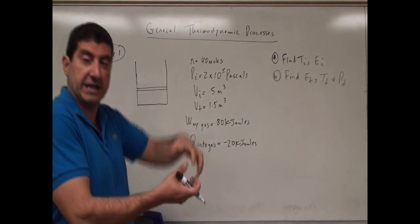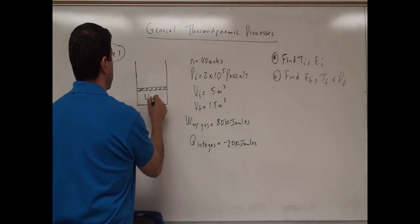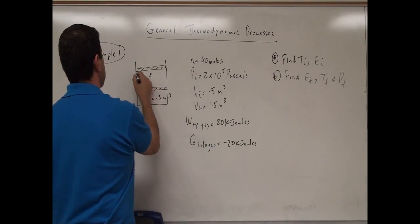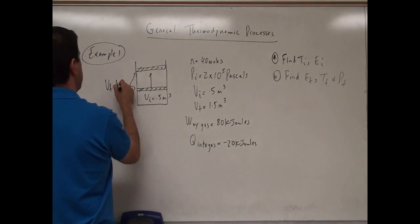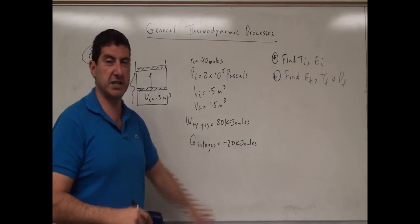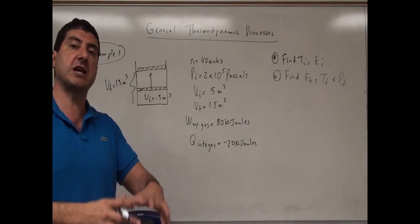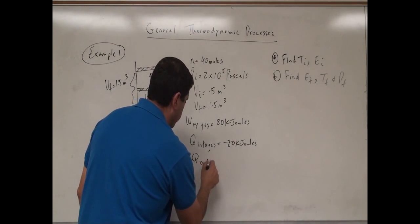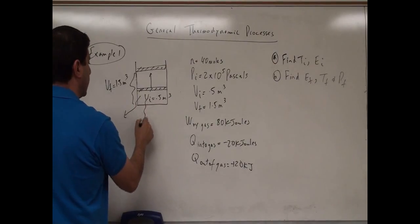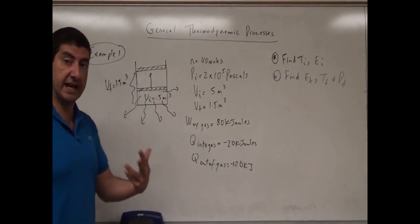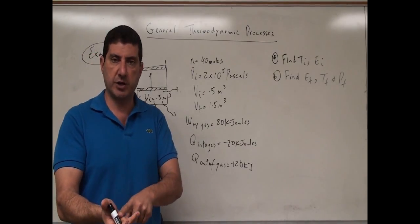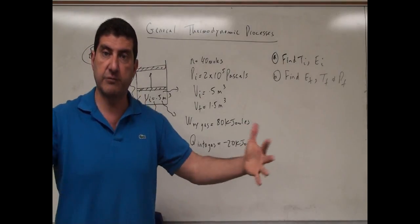Because the volume is increasing, the gas is doing work on the piston. The initial volume is 0.5 cubic meters and the piston is rising, eventually reaching a final volume of 1.5 cubic meters — a threefold increase. So the gas is doing positive work. We are also told that Q into the gas is negative 20 kilojoules, meaning heat is actually escaping out of the gas — Q out of gas is positive 20 kilojoules. This is a general process; it does not fit isothermal, isovolumic, isobaric, or adiabatic categories.